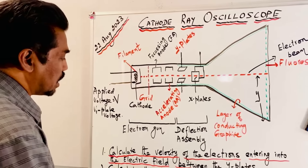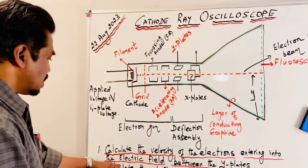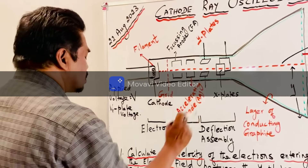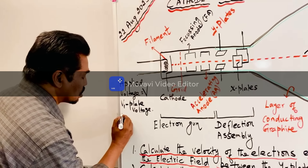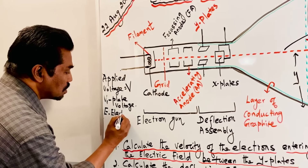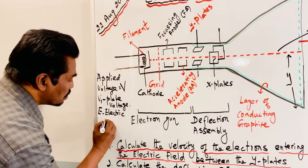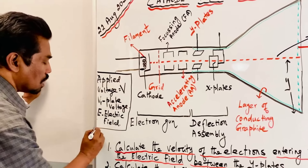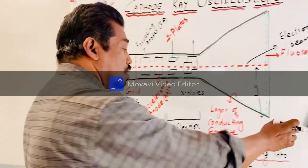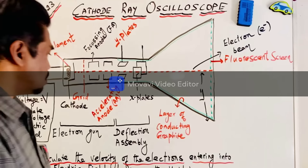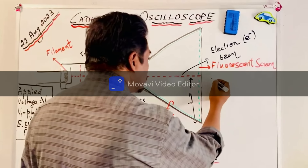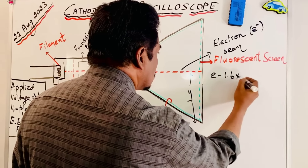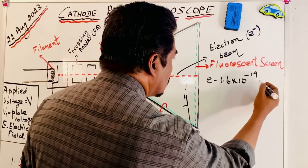Now we are going to calculate the velocity of electrons entering the electric field between the Y plates. Once the voltage is applied between the cathode and the accelerating anode, there will be an electric field E created in the plate. The electron has a charge E, which is 1.6 × 10⁻¹⁹ electron volts.